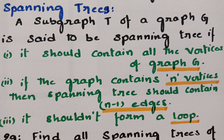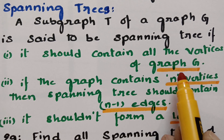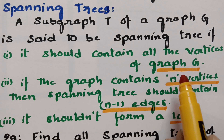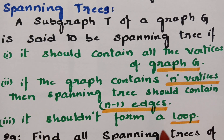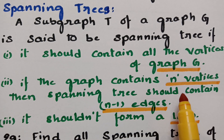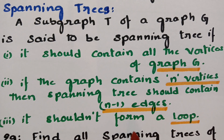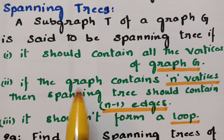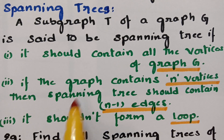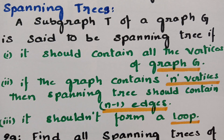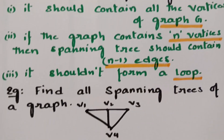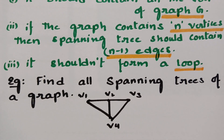To recap: the spanning tree should contain all vertices as per the main graph G; if the graph has n vertices, the spanning tree should contain n minus one edges; and it should not form any loops, circuits, or cycles. We follow these three properties to frame spanning trees. Here is an example: find all the spanning trees of the graph.